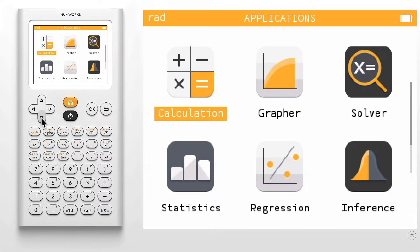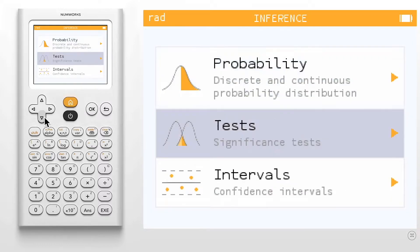Today we are going to learn how to perform a hypothesis test using one sample on the NumWorks graphing calculator. To begin, enter the inference application and select Tests.